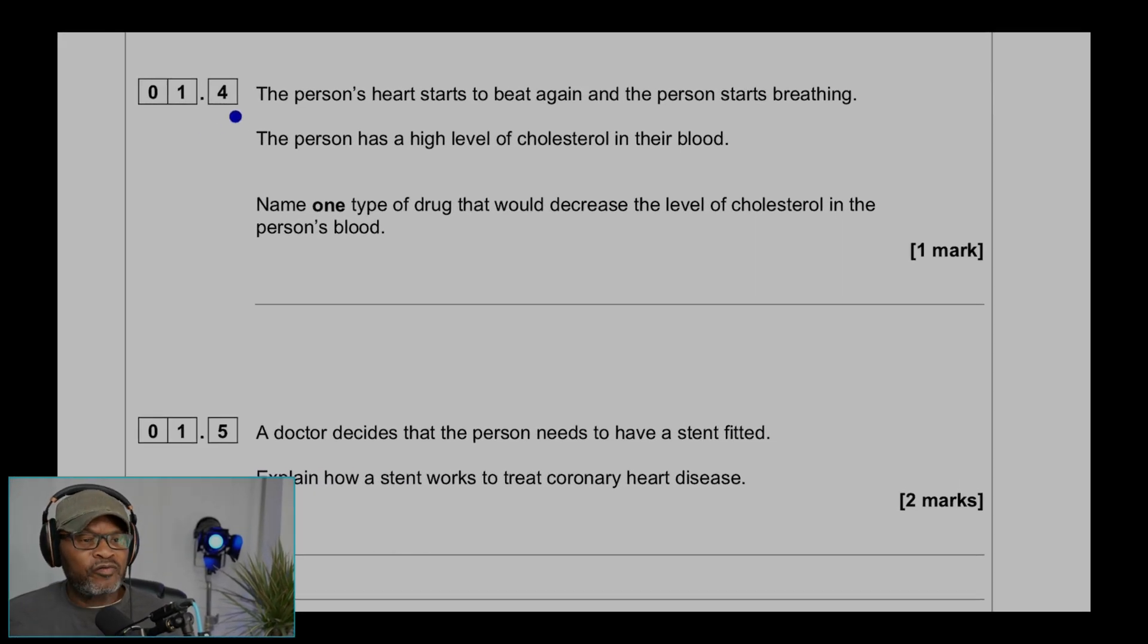Question 1.4: The person's heart starts to beat again and the person starts breathing. The person has a higher level of cholesterol in their blood. Name one type of drug that would decrease the level of cholesterol in the person's blood. Statins.